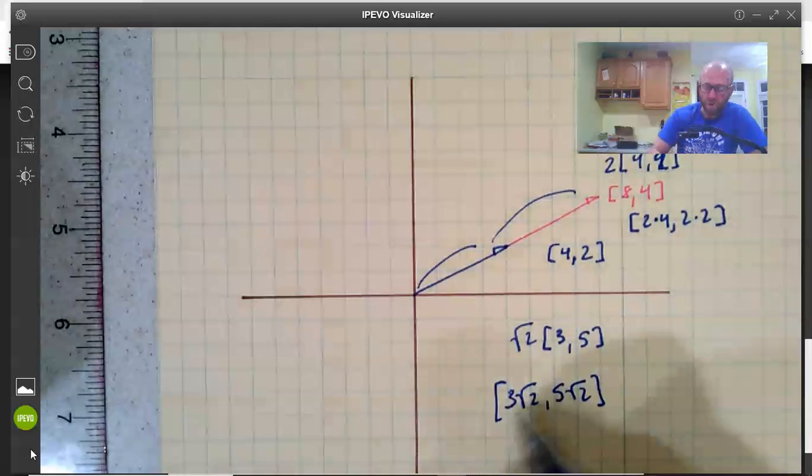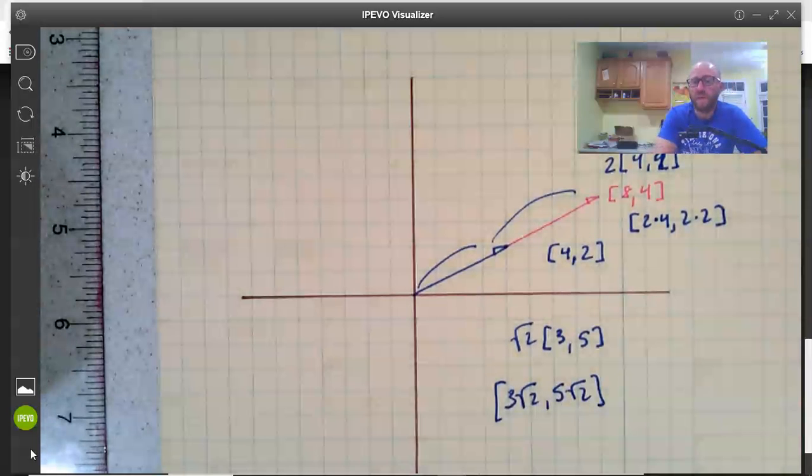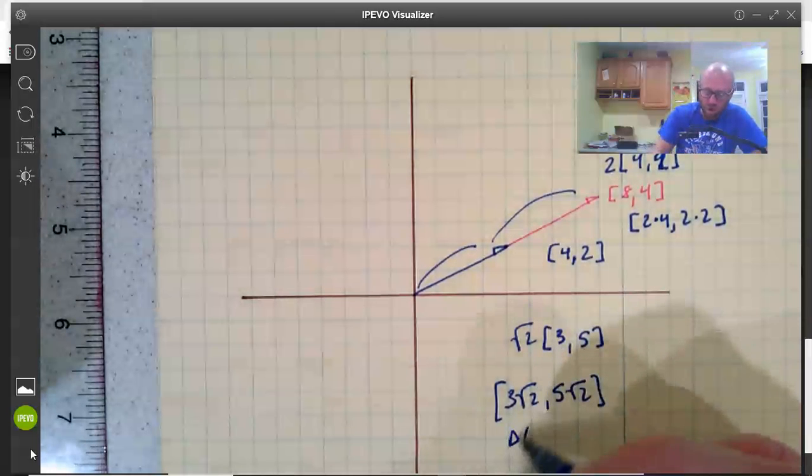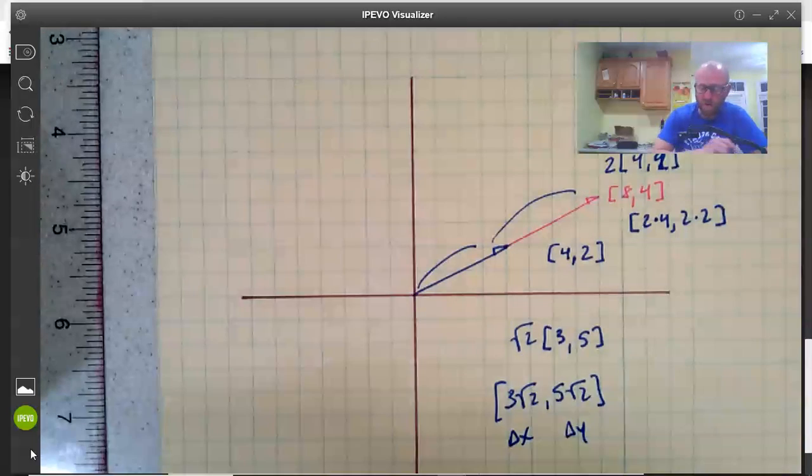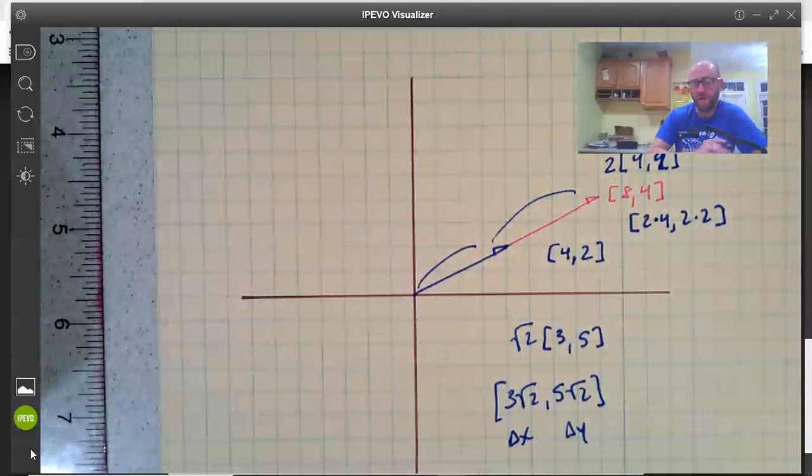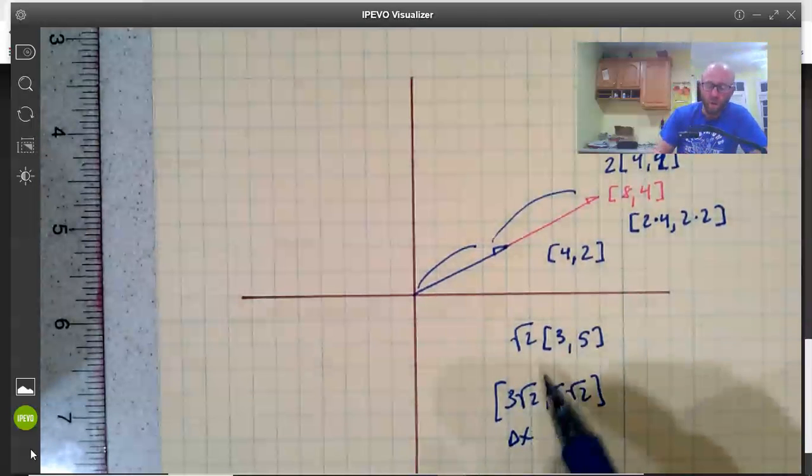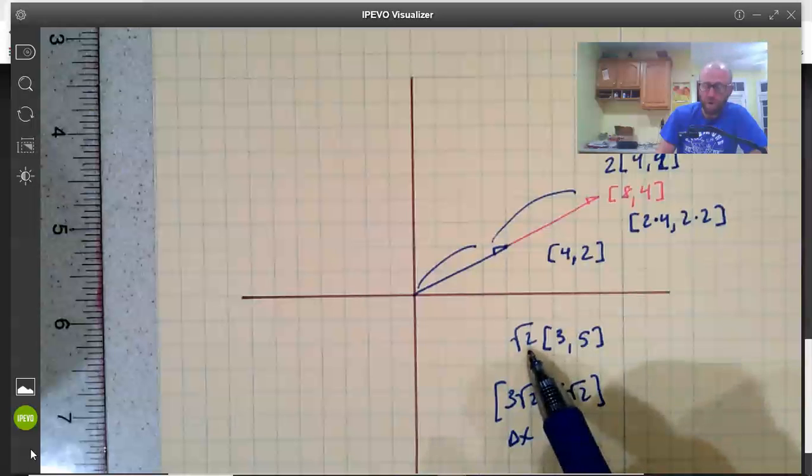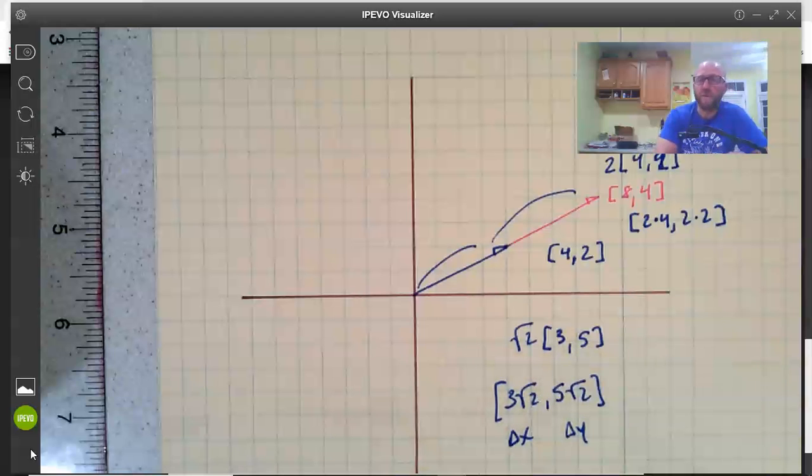So I can think of this as a single vector that goes these two distances. This is our change in x. That's our change in y. So this is a vector that moves an object 3 times the square root of 2 units to the right and 5 times the square root of 2 units up. Or I can think of it as square root of 2 times this particular vector that goes 3 units over and 5 units up.